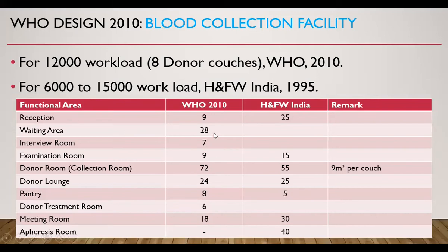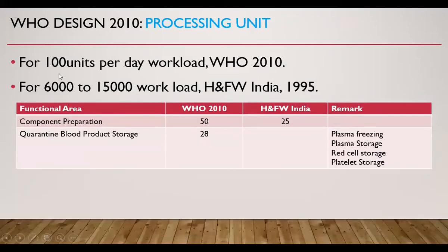For the Donor Room, the requirement is 9 square meters per donor couch, and there is a requirement of 8 donor couches for this workload. For the Processing Unit for 100 units per day workload, the subdivisions are component preparation and quarantine blood product storage. Quarantine blood product storage — including plasma, freezing plasma storage, red cell storage, and platelet storage — requires 28 square meters. Component preparation requires 50 square meters.